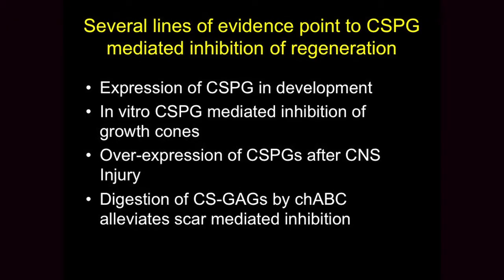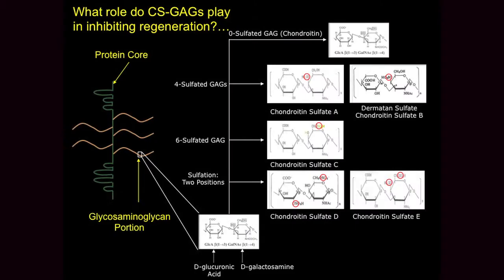In my lab, when we talk of CSPGs, you have a protein core and you have these sugars that come off of the protein core. There are two kinds of sugars, and then there are sulfate groups on top of these sugars. The location of the sulfate determines the kind of sugar. They can be single-sulfated at position six or four, and sometimes you can have both four and six — those are dual-sulfated sugars.